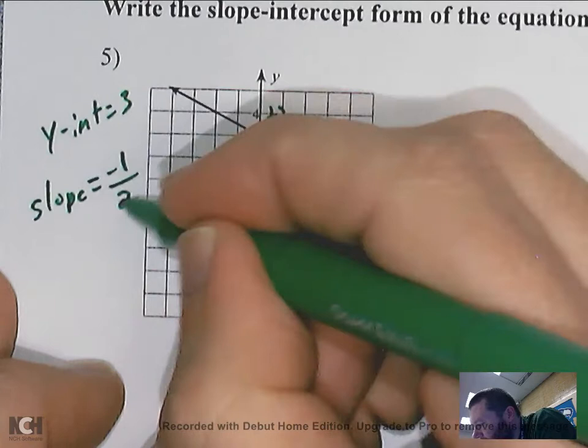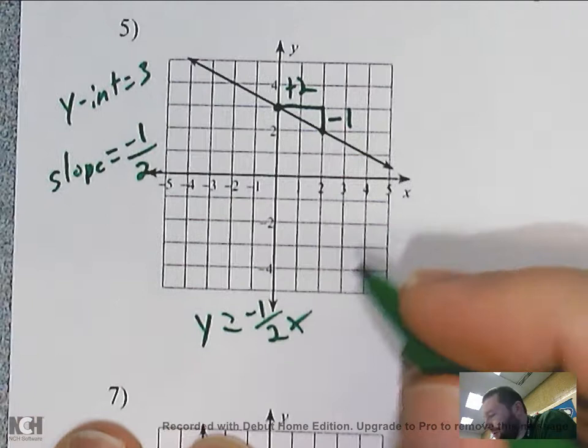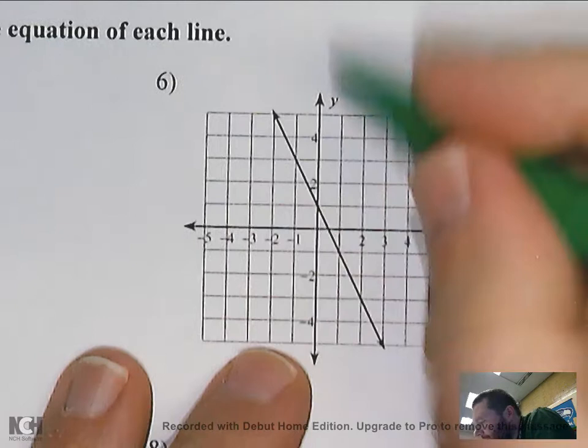So my equation would be y equals — my slope is negative one over two — x (don't forget the x or it's wrong) — and that's a positive three, so plus three. That would be my answer.